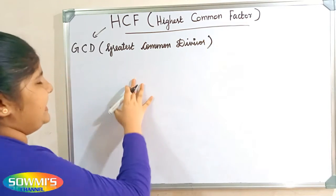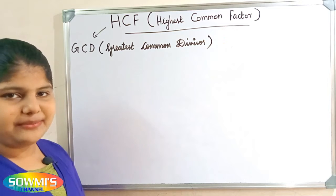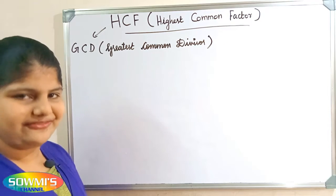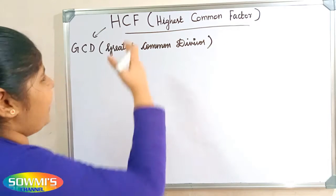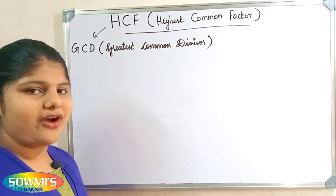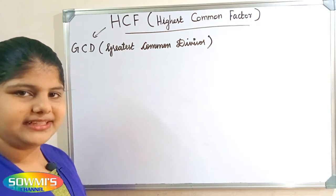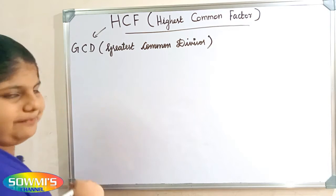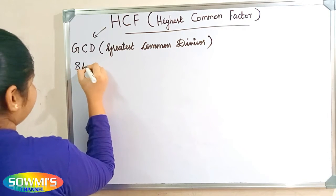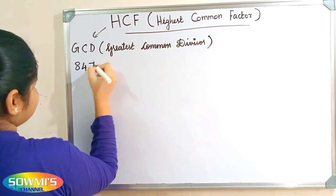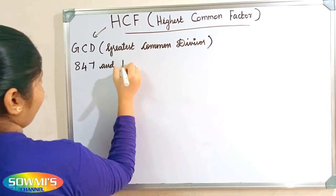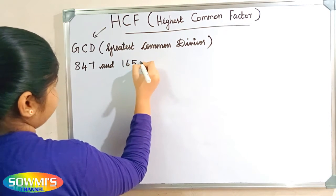Finding HCF for larger numbers using the prime factorization method is difficult. Finding HCF for larger numbers using the long division method is easy. For example, we can take 847 and 1650.